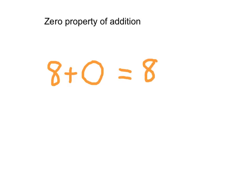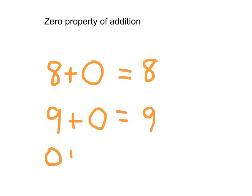So 8 plus 0 equals 8, or 9 plus 0 equals 9. It doesn't matter what side of the equation it's on, and it also does not matter as to our order. So if we have zero plus 3, that sum is still 3. And if we put zero plus 7 on the right-hand side of the equation, zero plus 7 does equal 7.